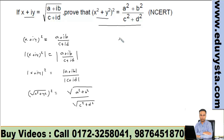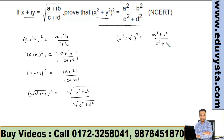So we have x² + y². Now squaring both sides gives (x² + y²)² = (a² + b²)/(c² + d²). And so we have the required result.